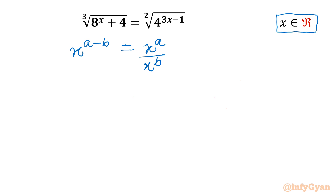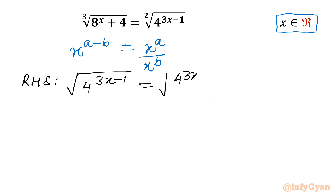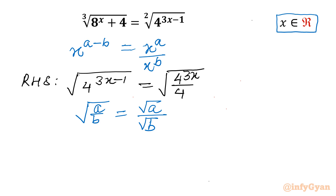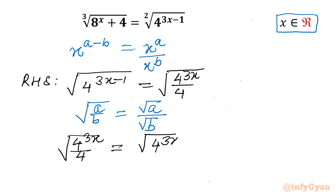We will begin with the RHS. RHS is square root of 4^(3x minus 1). By using this property I can write square root of 4^(3x) over 4^1, which is 4. Using the surd property √(a/b) = √a / √b, the RHS becomes square root of 4^(3x) divided by square root of 4, and square root of 4 is 2.